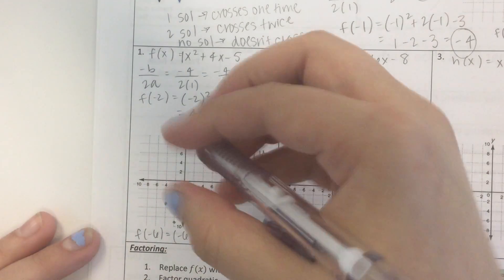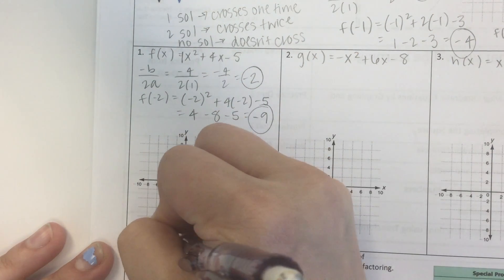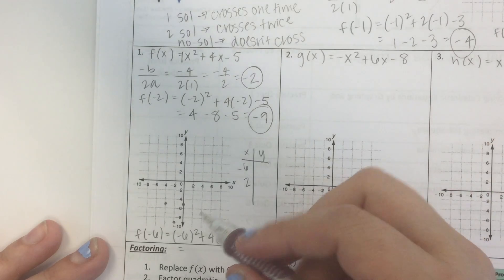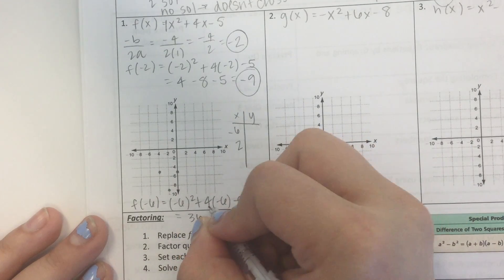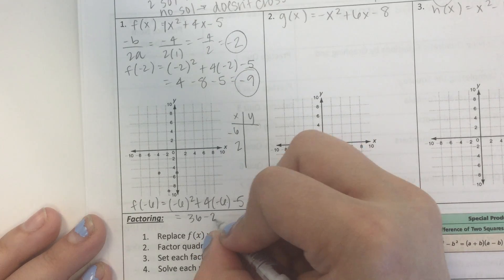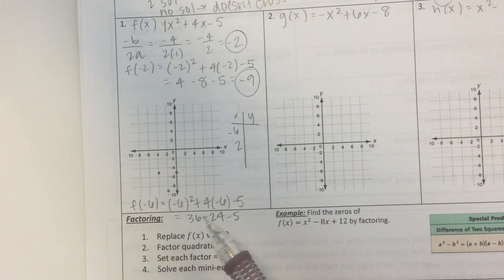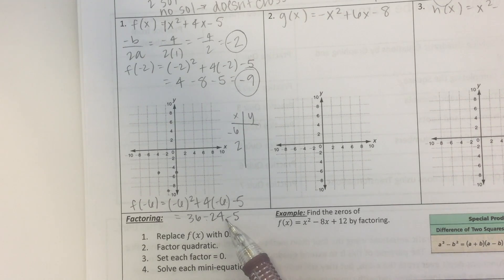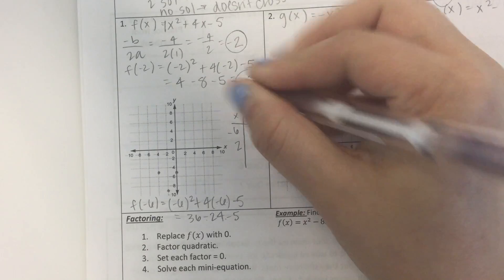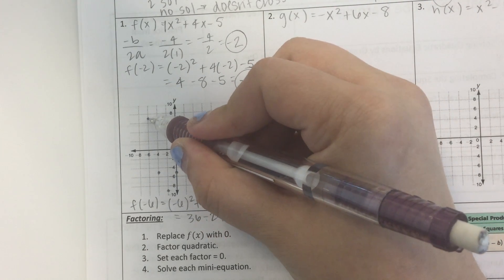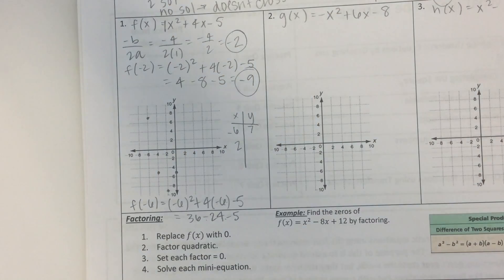I'm running out of room, but that's quite all right. Negative 6 squared is a positive 36. 4 times negative 6 is negative 24 minus 5. So 36 minus 24 is 12. 12 minus 5 is 7. Interesting. So that is not a point on the x-axis.